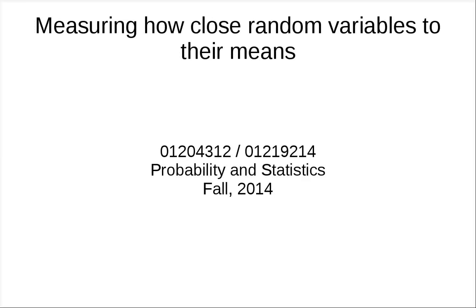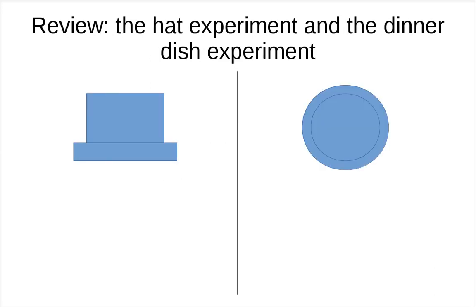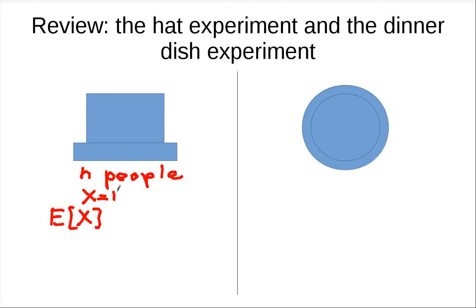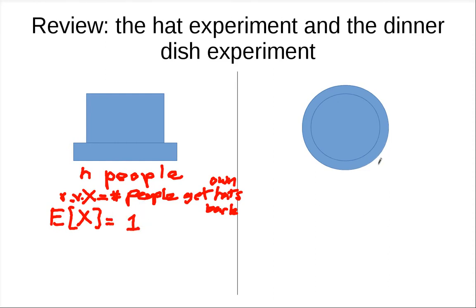In this clip, we will learn how to measure how close random variables are to their means. Recall that we explored two experiments in the practice. One is the hat problem, where there are N people and they put their hats in and get a hat back at random. We find out that the expected value of X, where X is the number of people who get their own hat back, is 1.